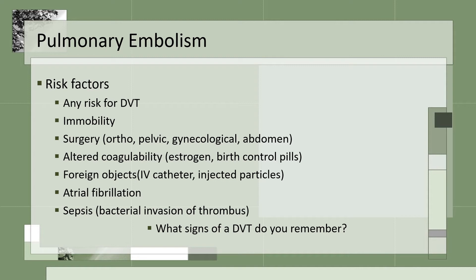Additional PE risk factors include altered coagulability, patients taking estrogen or birth control pills, uterine, ovarian, prostate, or lung cancers, foreign objects from IV catheters that get dislodged, injected particles, atrial fibrillation, and sepsis — which is a bacterial invasion of a thrombus.